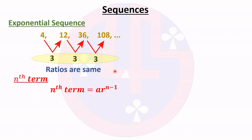The formula to find the nth term is a·r^(n-1), where a represents the first term and r represents the common ratio. Substituting the values, we get 4 times 3^(n-1).